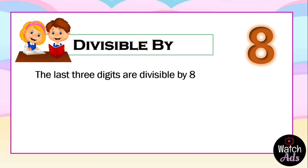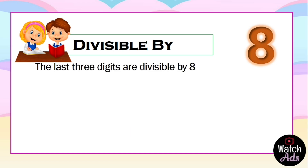The first condition to test divisibility by eight is that it should be an even number. For our first example, 8371 is an odd number, which means it is not divisible by eight.